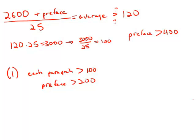So we have no way of knowing whether the preface is bigger or smaller than 400. So we have no way of knowing whether the average is over 120 or not. So this statement by itself is insufficient.